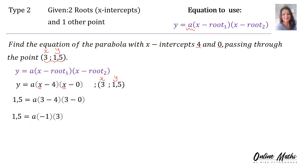Then we can say 3 minus 4 is negative 1. 3 minus 0 is 3. And here you will say minus 1 times 3. And you end with 1.5 equals minus 3a. And then to solve a, we will divide both sides by negative 3. And we end with a's value is minus 0.5.